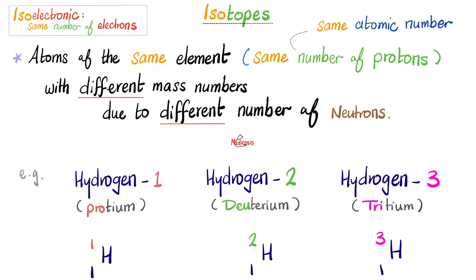Isotopes have the same number of protons, which means they have the same atomic number. However, they have a different mass number or different atomic mass. Example: here are three isotopes of hydrogen — hydrogen-1, hydrogen-2, and hydrogen-3. One is called proto, two is deuterium (as in deuteronomy), and three means tri, as in triangle. All of them have the same number of protons and the same atomic number — that's why they are isotopes. But they have different numbers of neutrons, which is why they have different atomic masses.